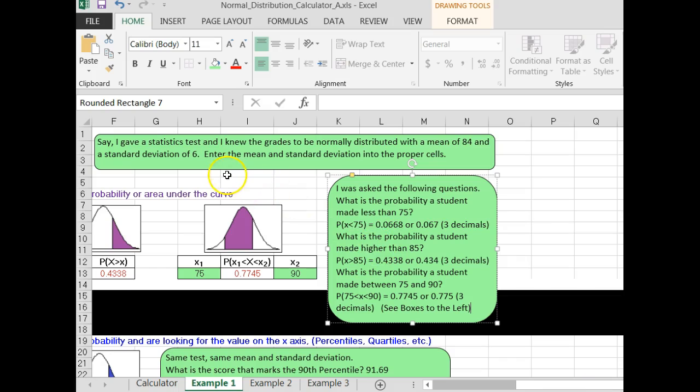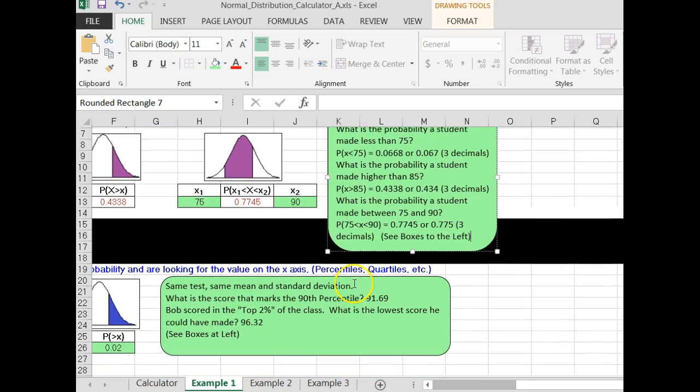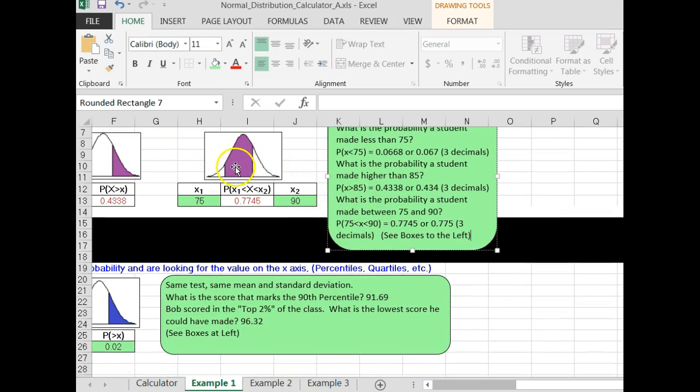I've got an example. Say I gave a statistics test and I knew the grades to be normally distributed with a mean of 84 and a standard deviation of 6. I've got some questions related to the purple ones, where we're finding the probability, and the blue ones, where we're finding the x values.